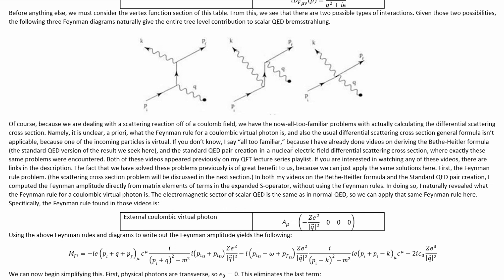If you didn't know, I say all-too-familiar because I have already done videos on deriving the beta-Heitler formula and the standard QED pair creation in a nuclear electric field differential scattering cross-section where exactly these same problems were encountered. Both of these videos appeared previously in my quantum field theory lecture series playlist. If you are interested in watching any of these videos, there are links in the description. The fact that we have solved these problems previously is of great benefit to us because we can just apply the same solution here.